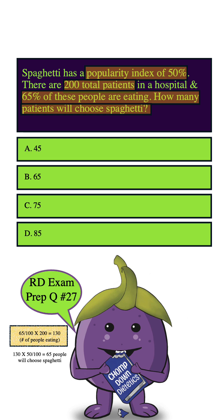Now, we just take that number of 130 and multiply it by 50, which is the popularity index of spaghetti. Once we multiply 130 by 50, we divide that by 100, and that will give us 65 people who will choose spaghetti.